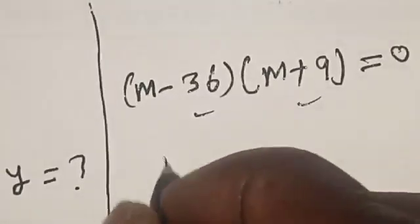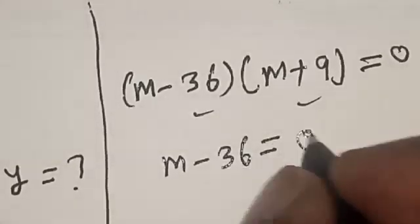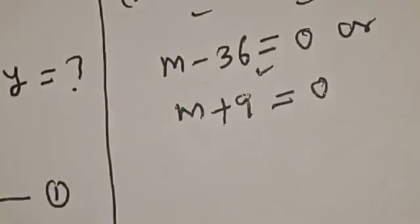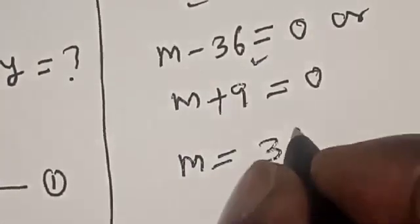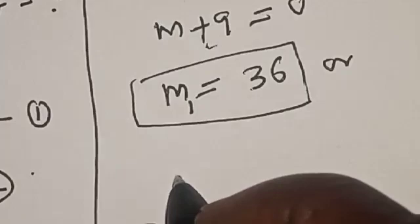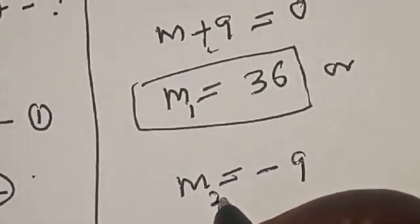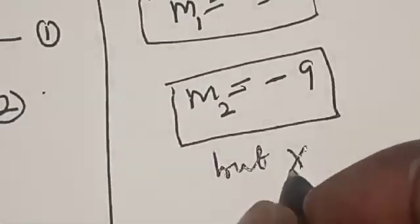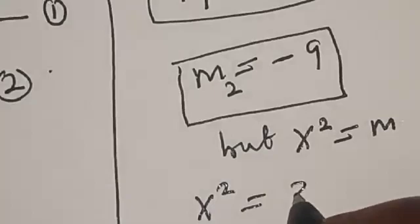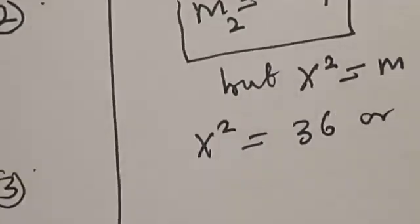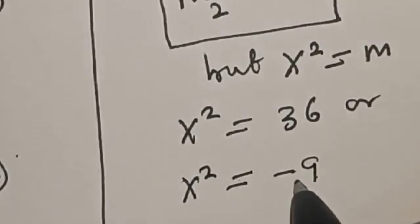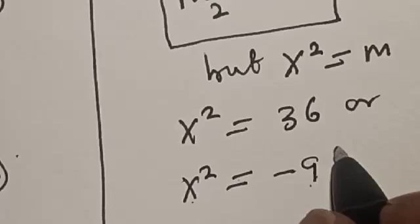There are two cases: m minus 36 equals 0, or m plus 9 equals 0. From the first case, m equals 36. From the second case, m equals minus 9. But since m equals x squared, we have x squared equals 36 or x squared equals minus 9. Since x squared cannot equal minus 9, that solution is rejected.